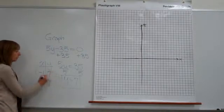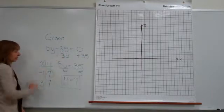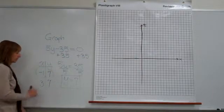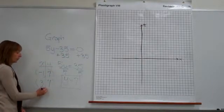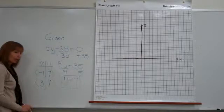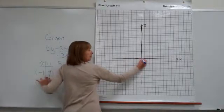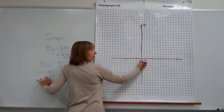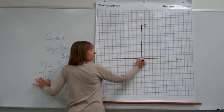Let's put negative 1 for our x and maybe 3 for our x. So we have ordered pairs negative 1 comma 7 and 3 comma 7 — both of which make this equation true. For negative 1 comma 7, from the origin we'll go left 1 and then up 7.